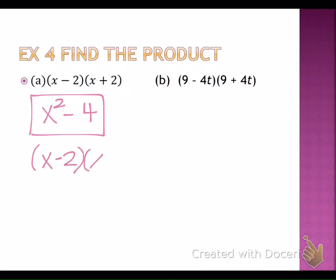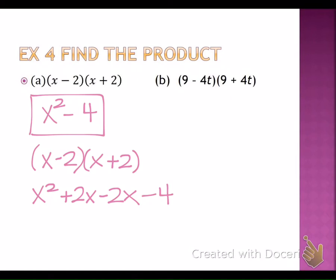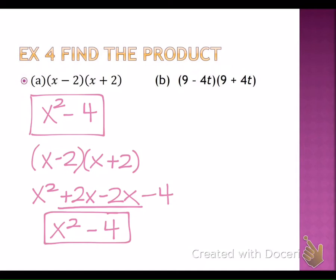I want to show you how FOIL gets the exact same answer. X times x is x squared. The outside terms give positive 2x. The inside terms give negative 2x. The last terms give negative 4. The two middle terms cancel, so x squared minus 4 is the final answer. FOIL will always work, but look how much faster we got there without having to do all that work.